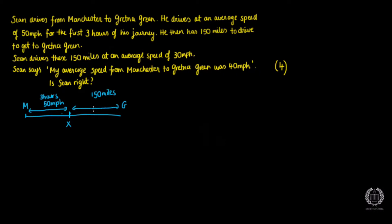Sean drives these 150 miles at an average speed of 30 miles per hour. So from point X to point G (Gretna Green), he drives at an average speed of 30 miles per hour over 150 miles. So here's my little diagram: from Manchester to point X — first three hours at 50 miles per hour — and then from point X to Gretna Green — the remaining 150 miles at 30 miles per hour.